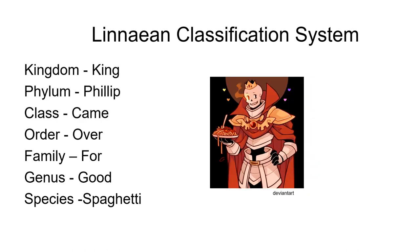It can be hard to remember all of these words sometimes, and so the one that I learned in high school was 'King Phillips came over for good spaghetti' — Kingdom, Phylum, Class, Order, Family, Genus, and Species. But see if you can come up with your own list in order to remember all of these words.